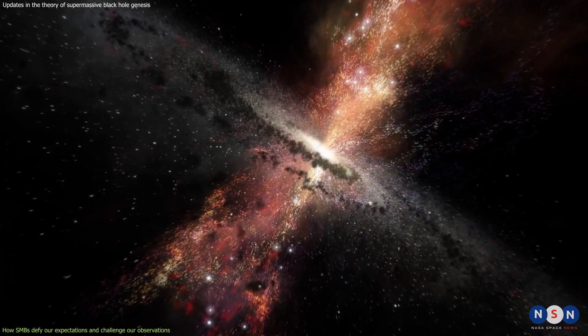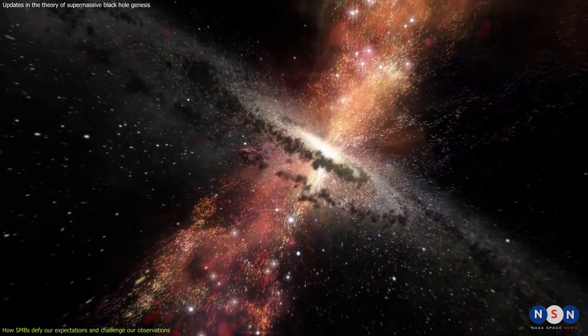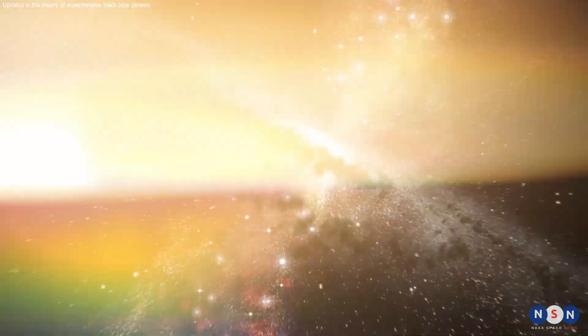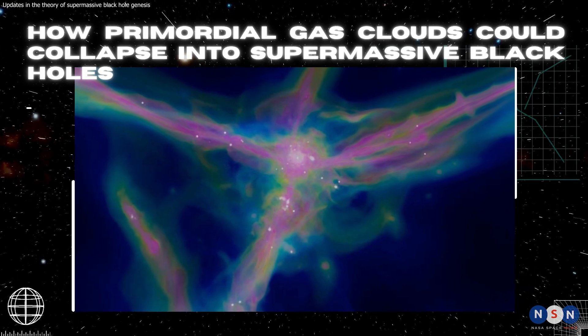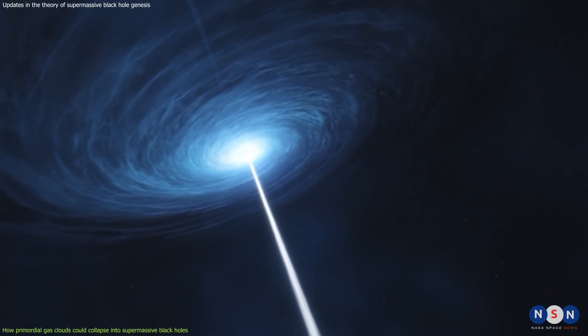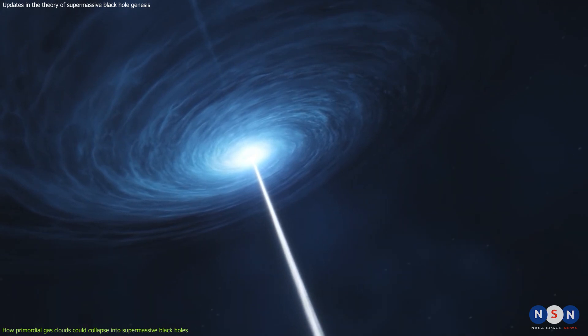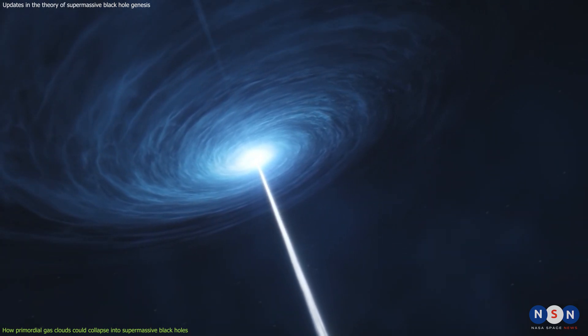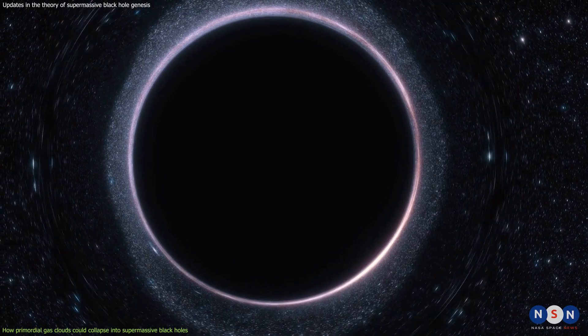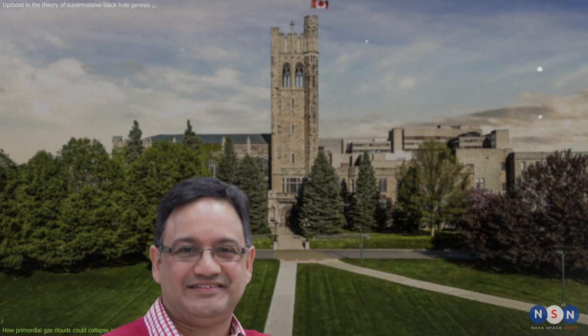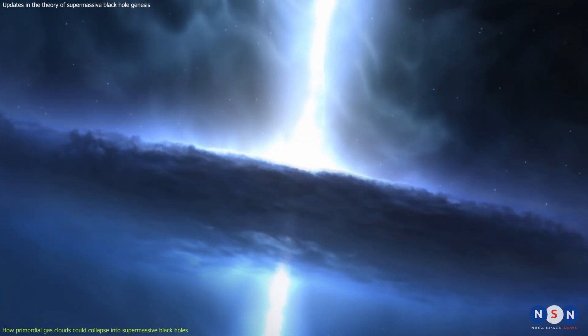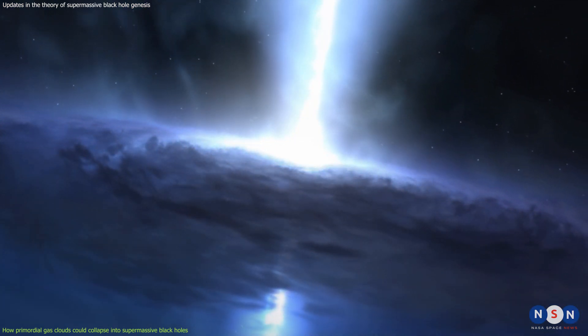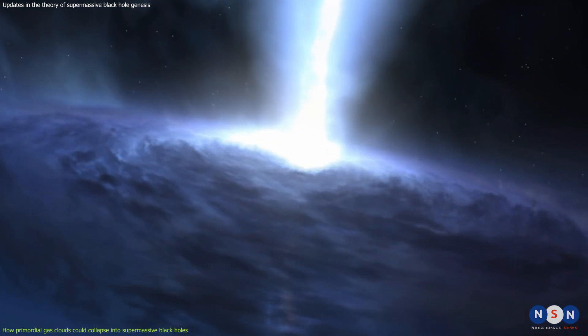But without much success, until now. A new study published in July 2023 has proposed a different mechanism for supermassive black hole formation that could explain how some of them grew so quickly in the early universe. The study was led by Dr. Shantanu Basu from Western University in Canada, who used computer simulations and analytical models to show that supermassive black holes can form from the direct collapse of primordial gas clouds in the early universe without going through intermediate stages of star formation or smaller black holes.